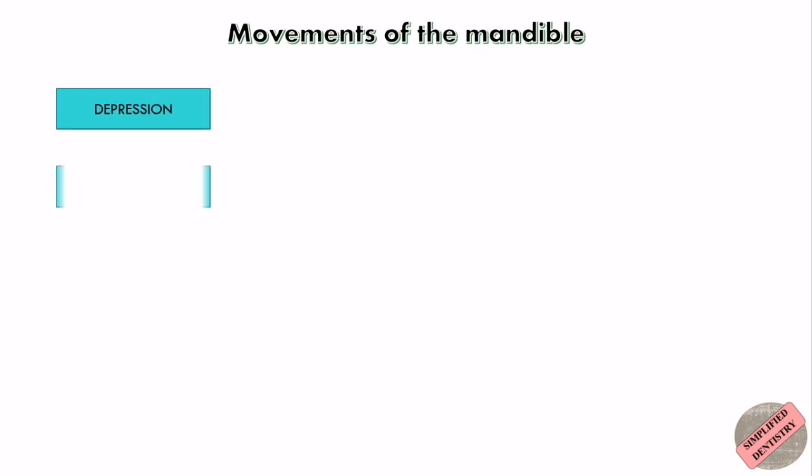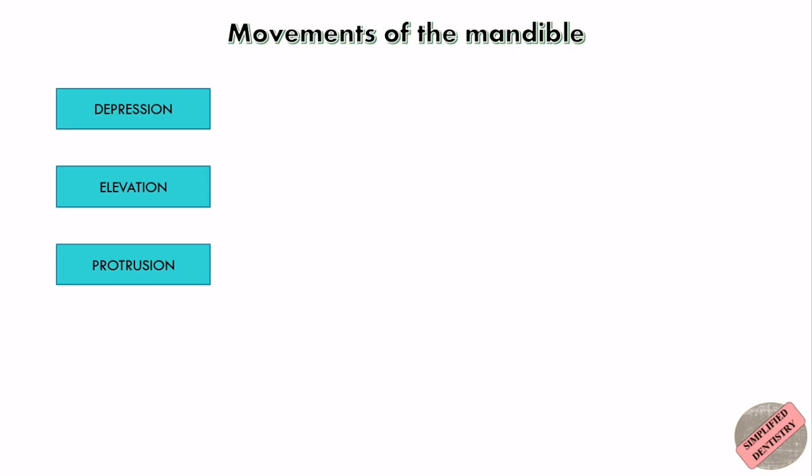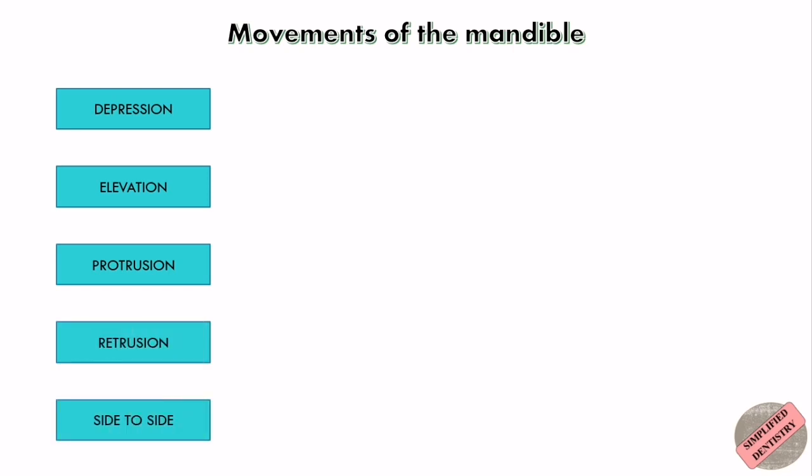The different types of mandibular movements are depression, elevation, protrusion, retrusion, and chewing — that is side-to-side movement. Now let's know one by one which muscles help in which type of movement.